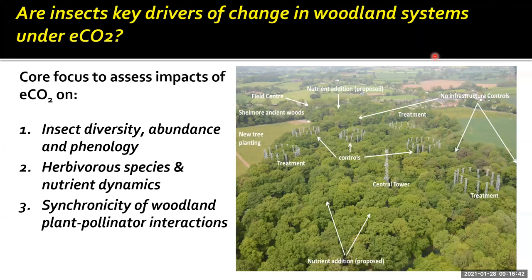The core question behind Liam's project was: are insects key drivers of changing woodland systems under elevated CO2? The first thing we had to do was characterise biodiversity, abundance between different groups, and monitor changes in phenology across seasons. We focused on herbivorous species, trying to understand how changes in nutrients and plant chemistry as a result of elevated CO2 might alter plant-herbivore interactions. This goes beyond that — insects feeding on plants put out frass, which drops into the soil as a more labile nutrient source than leaf litter, so these changes can have big impacts on other parts of the system.